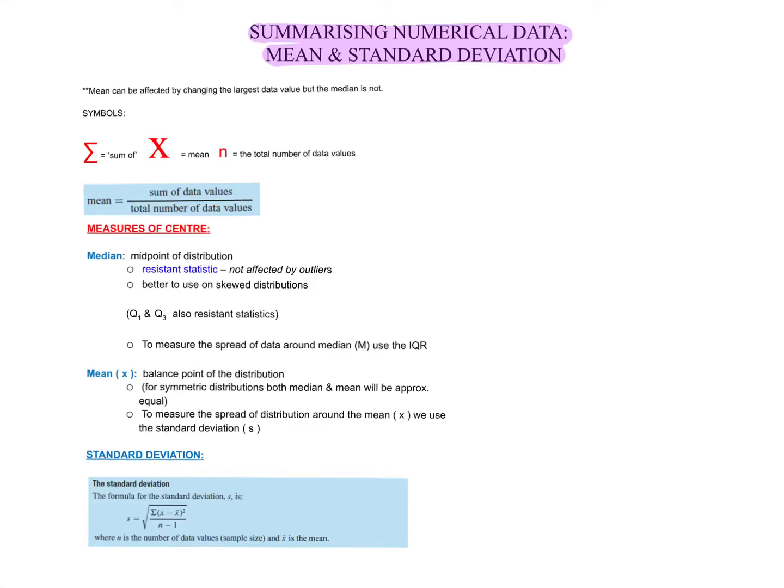So we're looking at summarising numerical data. We were doing that before as well, which was when we were using box plots, we were looking at the median, the Q1, Q3. But mainly when we use those measures of summarising, we often have skewed data or with an outlier.